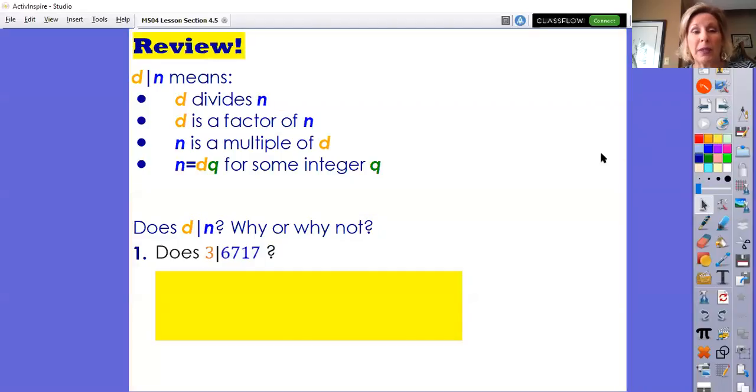So we'll begin with review. We know that d divides n means d is a factor of n. Likewise, that means n is a multiple of d. N is a multiple of d means that n can be written as n equals d times q for some integer q. Now let me remind you that both n and q can be any integer—meaning n and q can be zero, positive, or negative—but d we think of as a positive integer specifically.